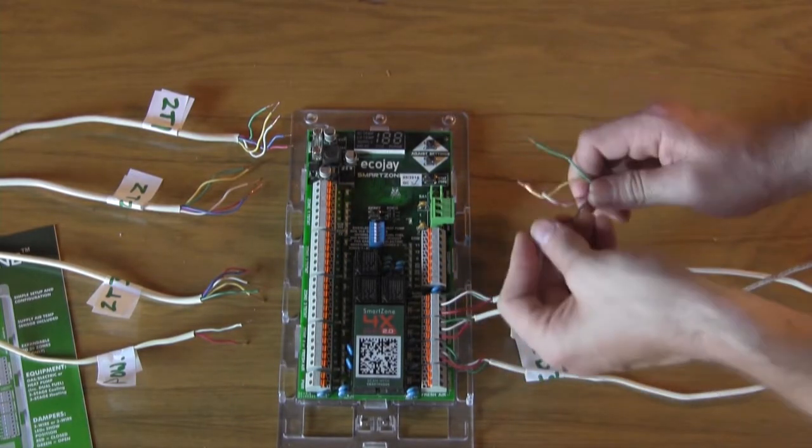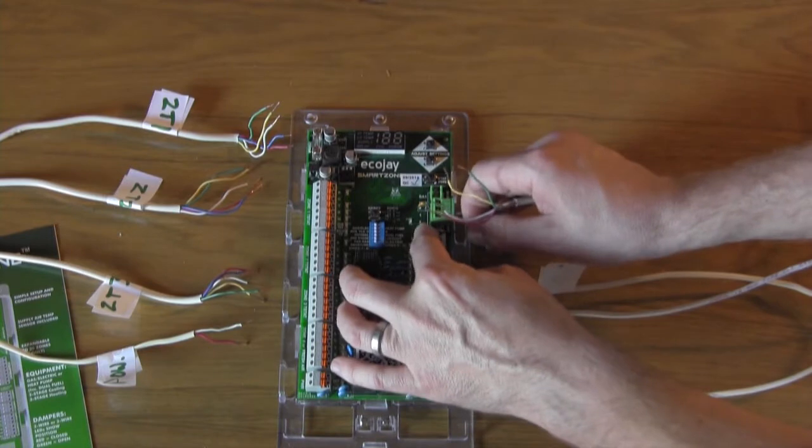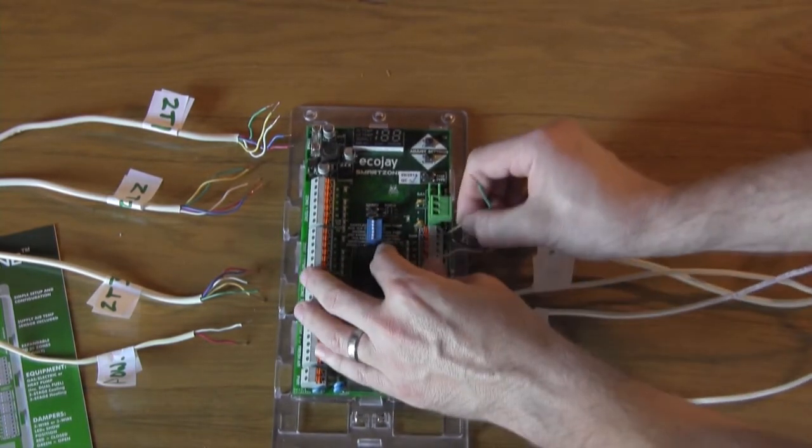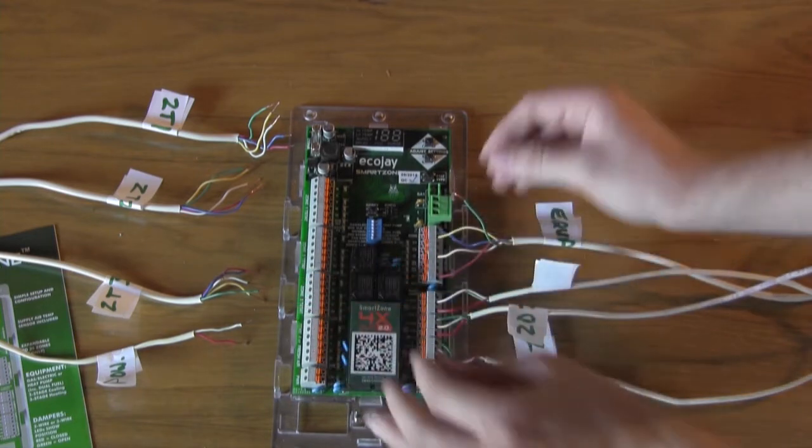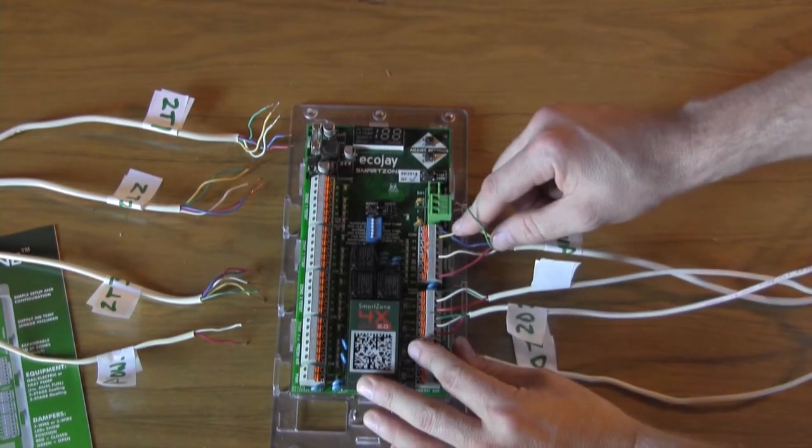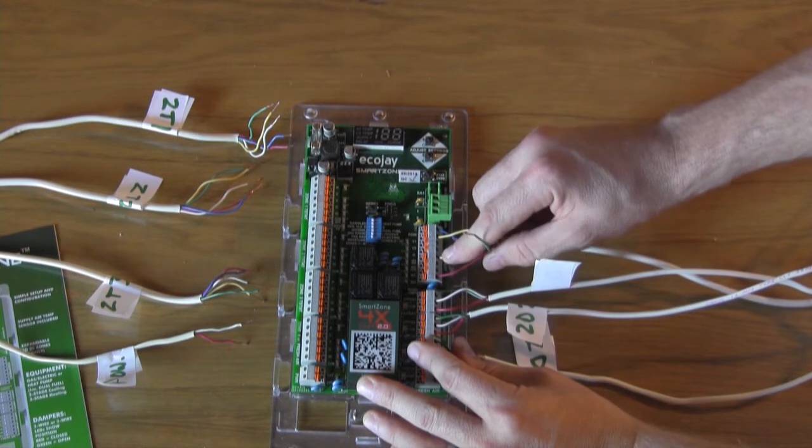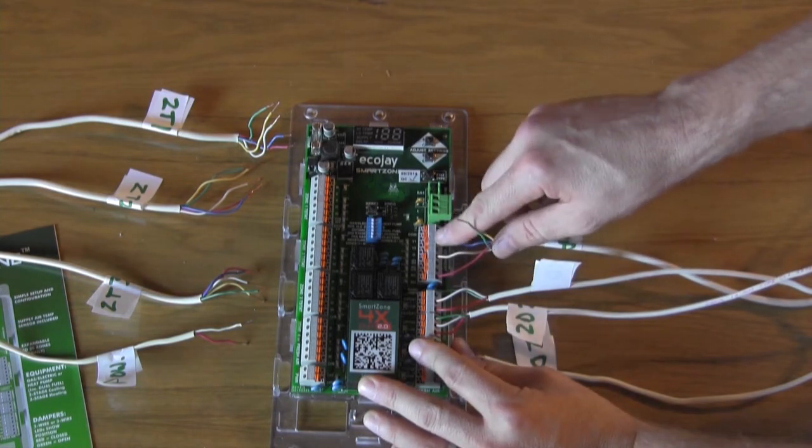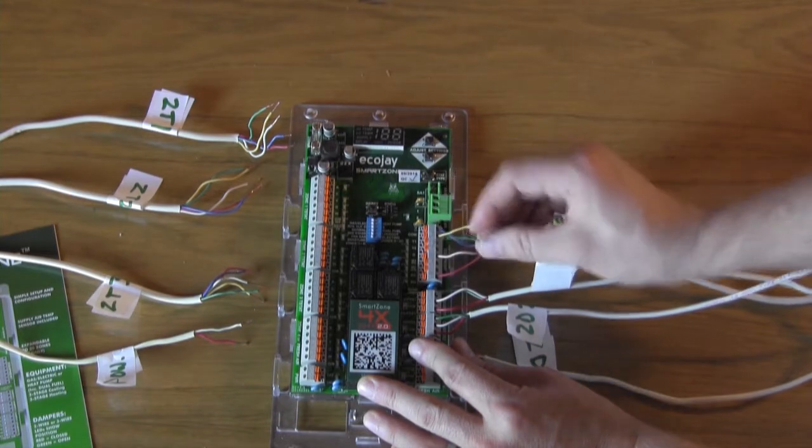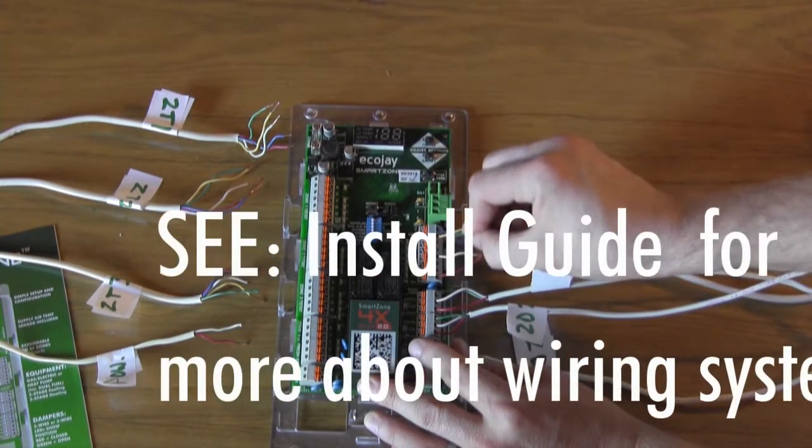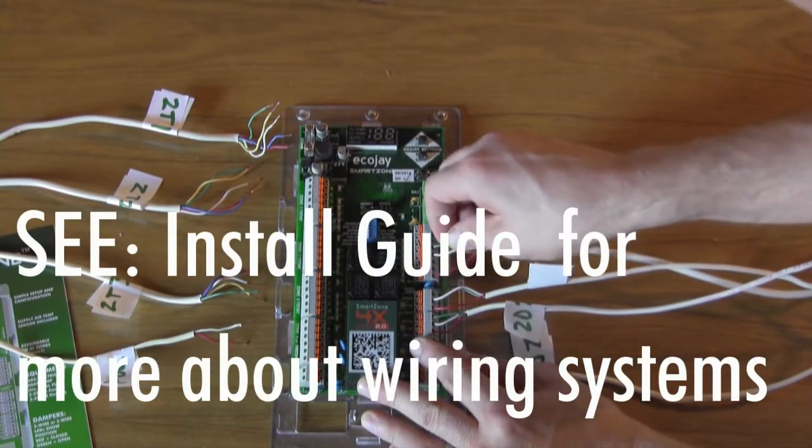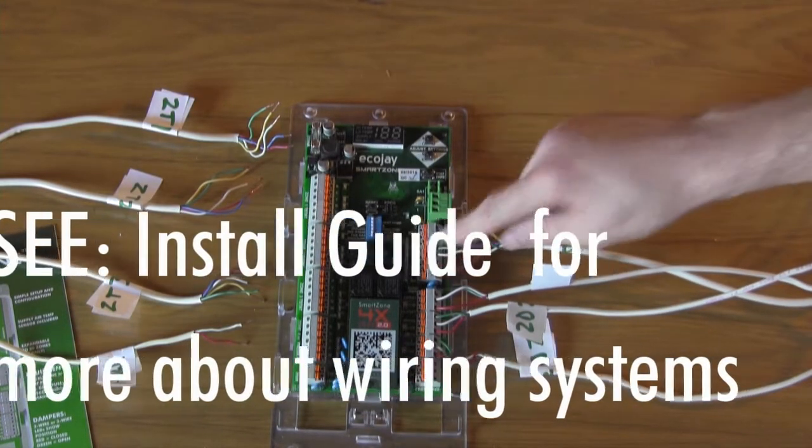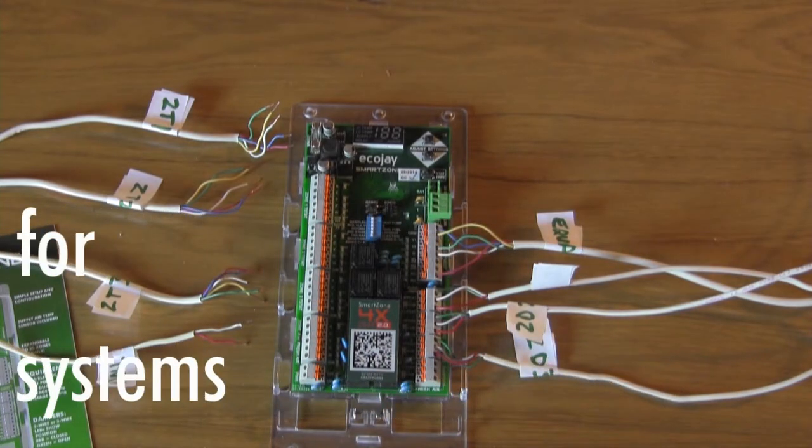We'll move to the equipment wires. This system is only a single-stage system, so there's only one Y wire and one W wire. Your system may be multi-stage and have a Y2 as well as a W2, or it may be a heat pump and have also an OB wire. Those terminals are labeled and any type of system can be used with the SmartZone.